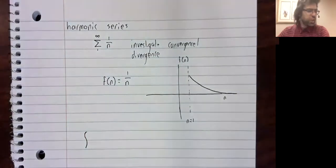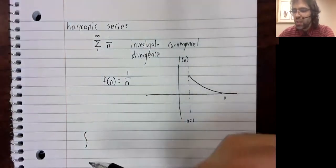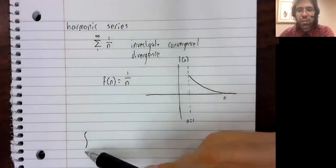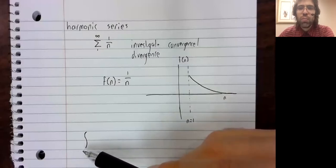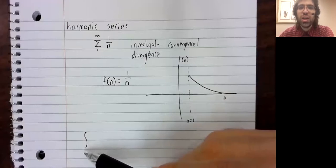So the reason when I defined the integral test that I didn't just go ahead and put a specific lower bound here, we can choose our lower bound. And our lower bound has to be such that the function is continuous, decreasing, and positive.